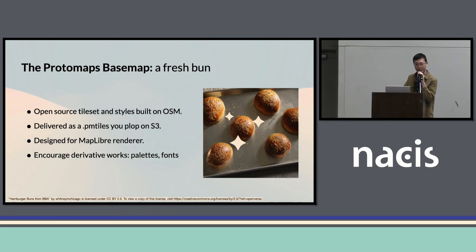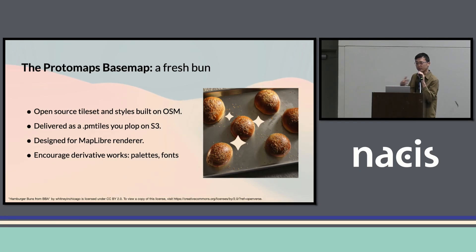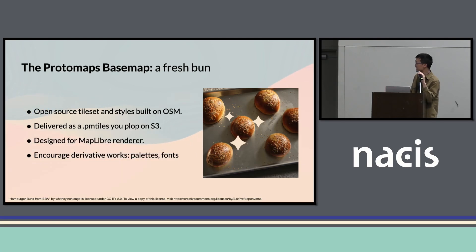It's designed mainly for the MapLibre open source renderer, which is a very user-friendly, smooth, interactive map renderer for the web. One major focus of the Protomaps project, which is different than other projects, is that I really want to encourage different derivative works. Instead of giving you a pre-chosen base map with all the colors and fonts selected, it gives you a skeleton with reasonable defaults, but also makes it possible to change those things. And because it can be hosted totally by yourself on your own storage, it becomes possible to slim down the data, change the sprites, change the fonts, and really make it your own.